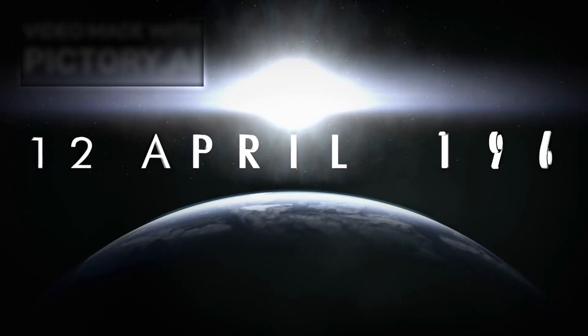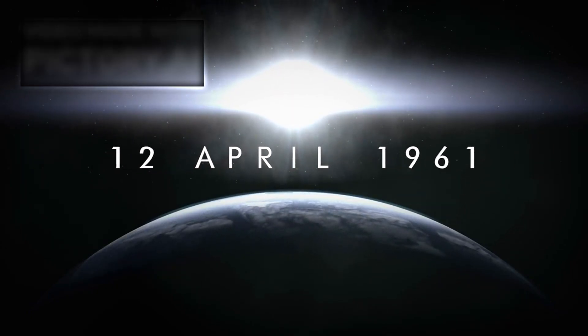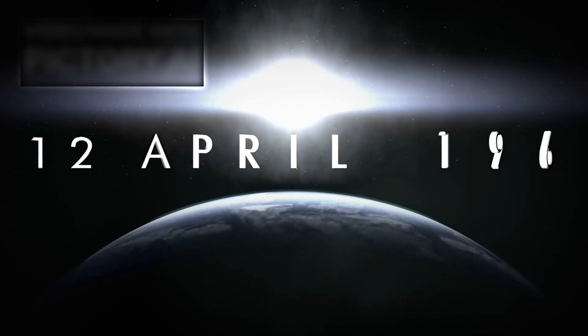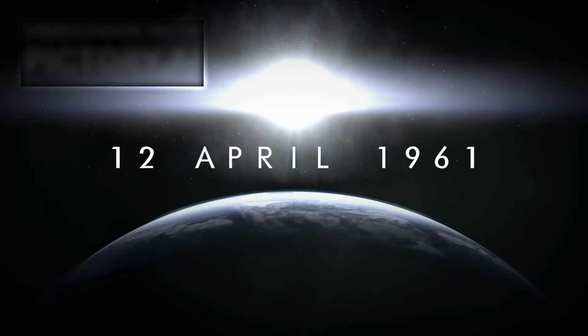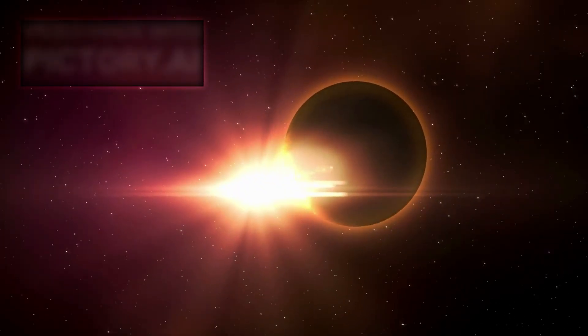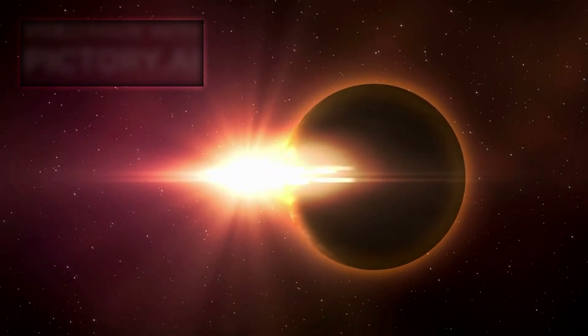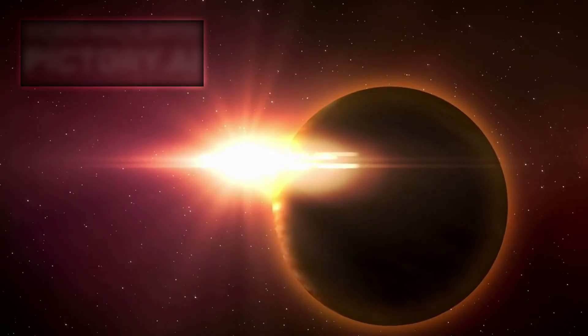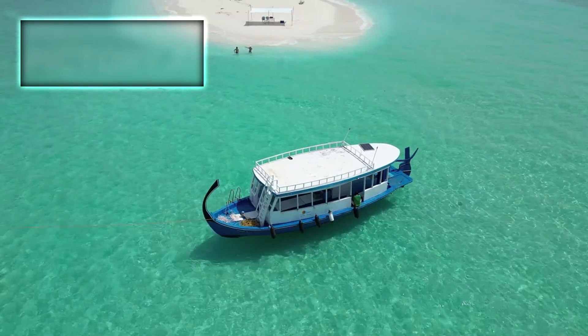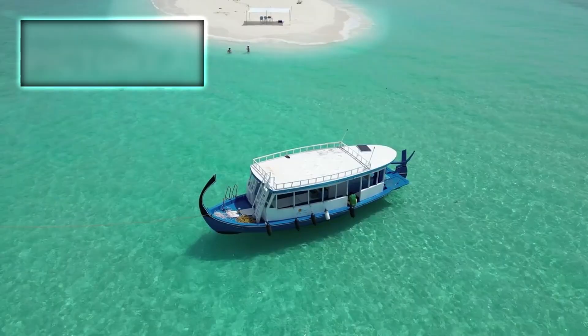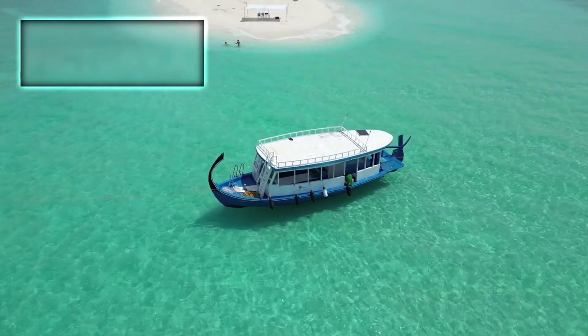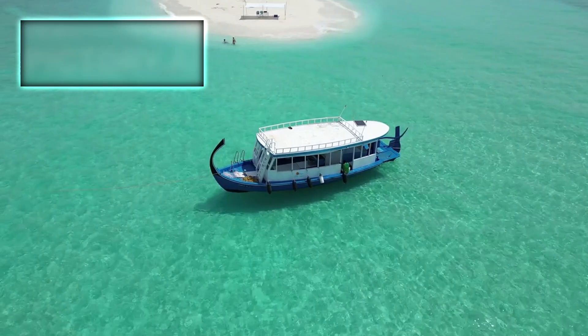In October 2017, astronomers around the world witnessed a phenomenon that would forever change the way we think about our solar system and the cosmos beyond. For the first time, an object was detected passing through our solar system that did not originate from our sun, but instead came from the vast expanse of interstellar space. This visitor was named Oumuamua, a Hawaiian word meaning scout or messenger, a fitting title for a traveler that seemed to bring a message from the stars themselves.